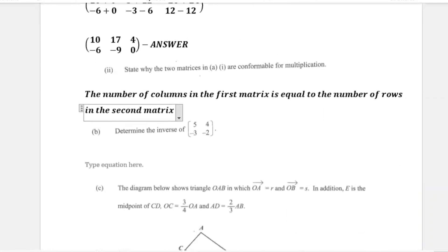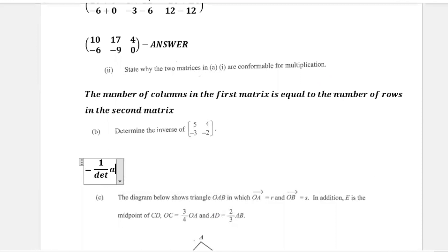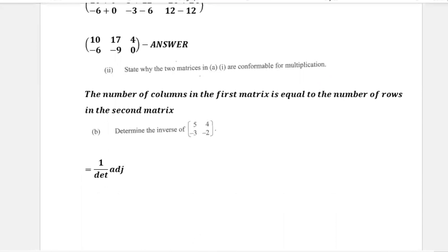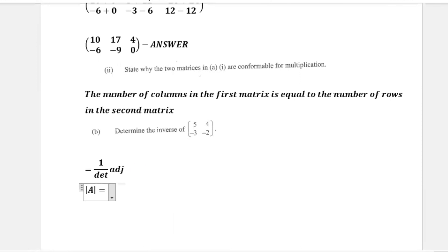Part B says: determine the inverse of the matrix [5, 4; negative 3, negative 2]. We know that the inverse is equal to 1 over the determinant multiplied by the adjoint. So we first need to find the determinant. Let's call the matrix A. The determinant would be 5 times negative 2 minus 4 times negative 3.